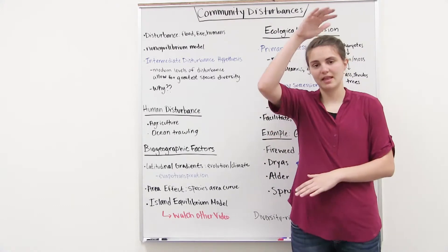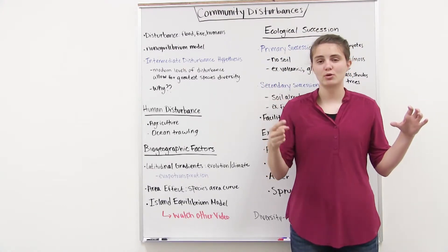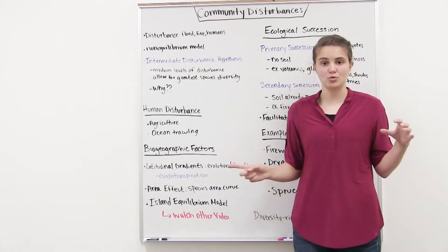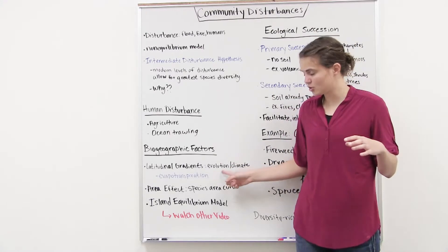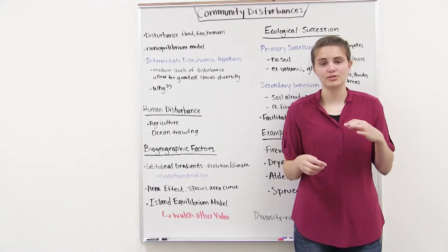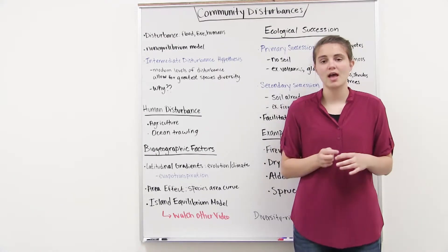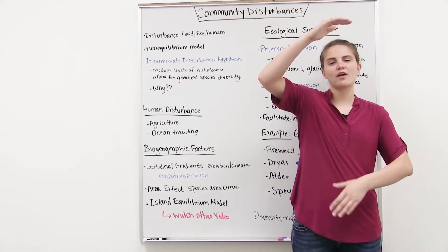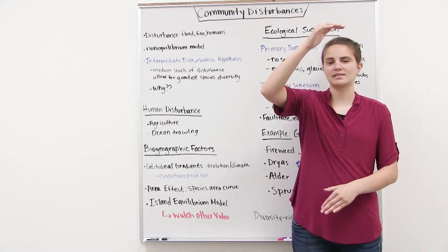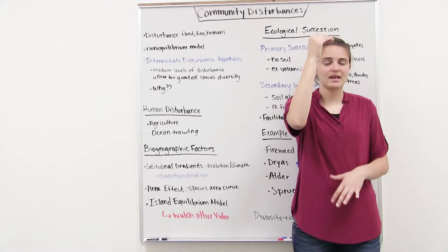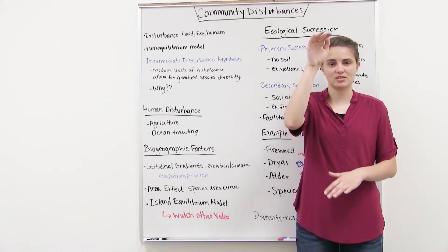So places that are near the equator, they have longer growing seasons because they have more sunlight and they're not in winter all the time, like places in the poles. Because they have longer growing seasons, they have more time for evolution to occur. And so we have more chances for speciation events to occur to allow for more species to arise. But the poles, they're not in their growing season a lot. And so there's less chance for these evolutionary and speciation events to occur.